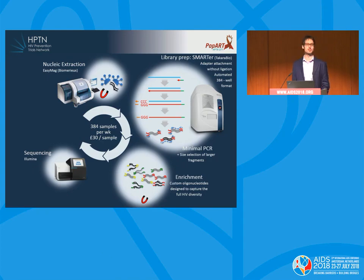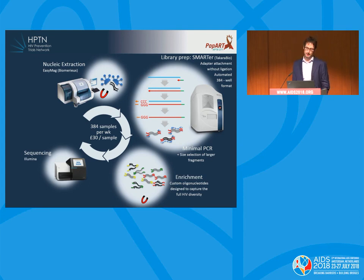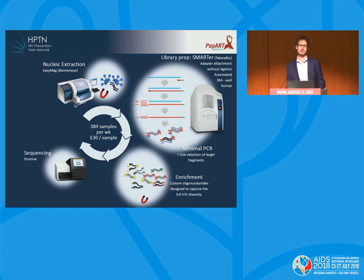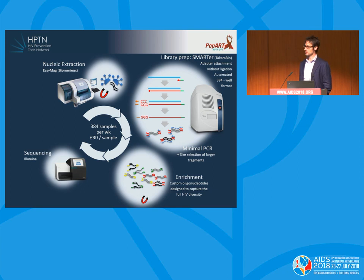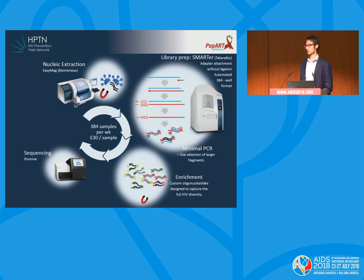Our method starts with 500 microliters of plasma. We extract the total nucleic acid and generate sequencing libraries from the RNA component using the SMARTer kits from Takara Bio. At this point, you can expect about 1% or less of your sequencing library to be HIV. We then enrich with a panel of oligonucleotide probes designed to capture the epidemic diversity of HIV, after which between 60 and 90% of everything will be HIV.